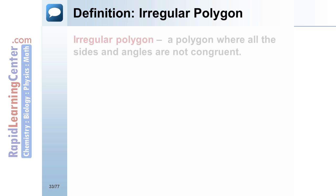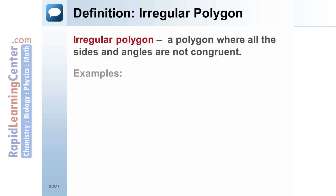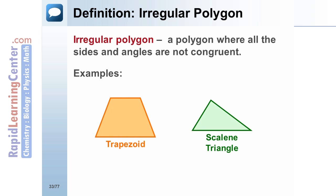An irregular polygon is a polygon where all the sides and angles are not congruent. Examples of irregular polygons include a trapezoid and a scalene triangle.